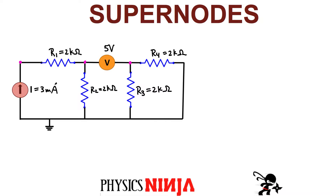We're going to start just like we would for nodal analysis — we're going to define the potential at some of these nodes. We'll call this V1, V2, and V3. This is a standard textbook example found in most electrical engineering books. We'll call the bottom node 0V, so all of these points down here are at the same potential, connected by ideal wires with no potential drop across them.